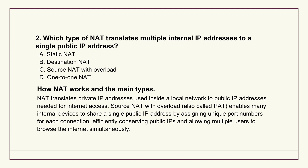Now for NAT - network address translation. Question two asks specifically about translating multiple internal IPs to a single public IP. The options were things like static NAT, destination NAT, source NAT with overload, and one-to-one NAT. The source points to source NAT with overload. It's the method that maps many private IPs to one public one, using different source port numbers for each internal connection. The explanation even mentions the other common name for it: PAT, port address translation.